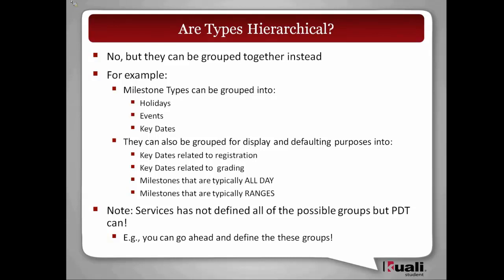By using the ability to group things, you get a lot of ability to group things for display, or to identify types for defaulting purposes — like milestones that typically are all-day versus milestones that take a range of begin and end date. Services has not defined all possible groups, but PDTs can. The core team will try to define enough examples of types and groups so that parallel development teams can say 'I get it' and add another group for a different purpose.